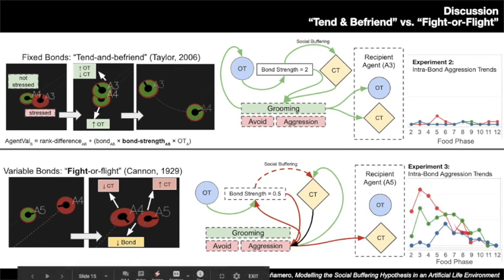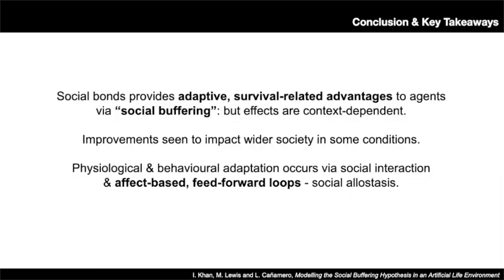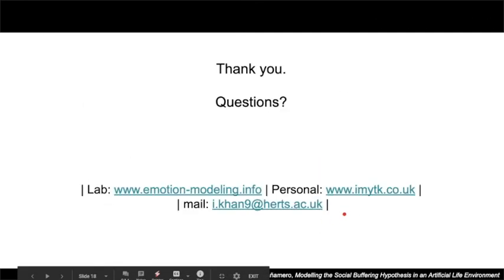To conclude: social bonds provide adaptive survival-related advantages via the social buffering effect, but the effects are dependent on social and environmental contexts and the types of effective bonds modelled. We also saw improvements to the wider society, suggesting a more widespread impact of social buffering. Finally, physiological and behavioural adaptation occurs through interactions with the social environment via affect-based feedforward loops — where positive social behaviours facilitate further positive behaviours and vice versa — underpinning the mechanisms of social allostasis as a potential mechanism of adaptation.